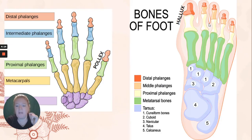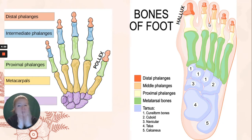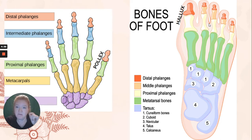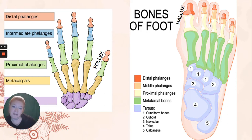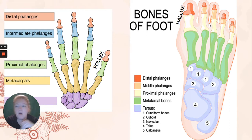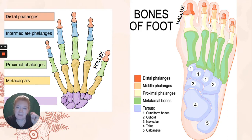Hands and feet: we have carpals, metacarpals. In the phalanges is where we have some differences. If you look at the color coding, in all of the phalanges you will see proximal phalanges. In all of them you will see distal phalanges. But notice the pollux — the thumb — is missing the intermediate phalanges. At the foot, same deal. We have tarsals; you have to know the name of one only: the calcaneus. Then metatarsals. All phalanges have proximal and distal phalanges, but the hallux — the big toe — is missing the intermediate phalanges.